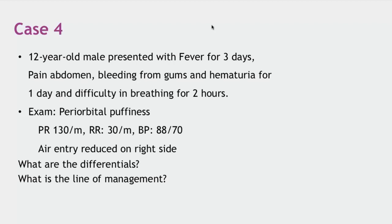That is how you should approach and write your differentials when the first patient arrives. For line of management: this patient is tachycardic and BP is low, so obviously the first thing is to manage shock. Using the ABC approach — airway and breathing are okay, but circulation is affected — so that is the first priority. Dengue is my first differential in this case.